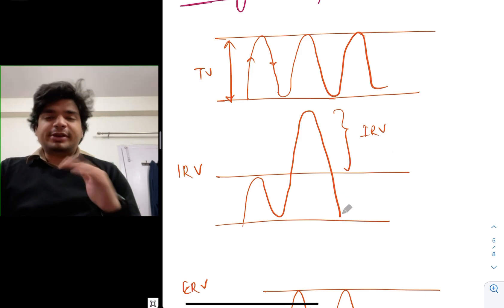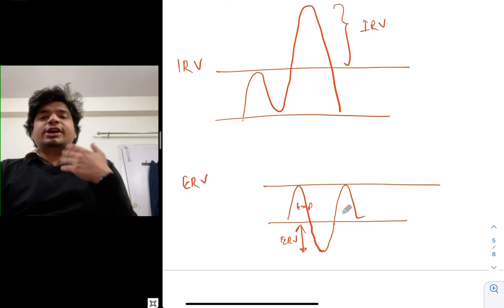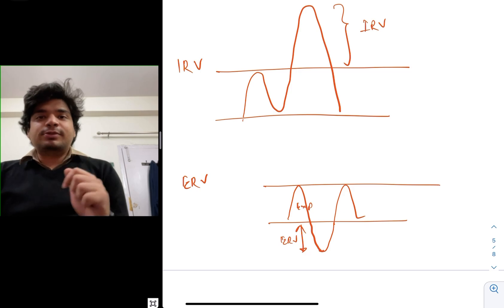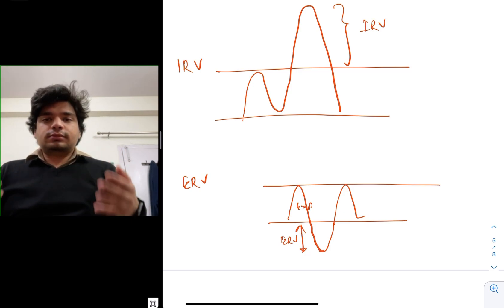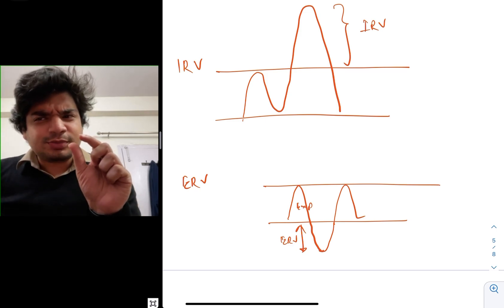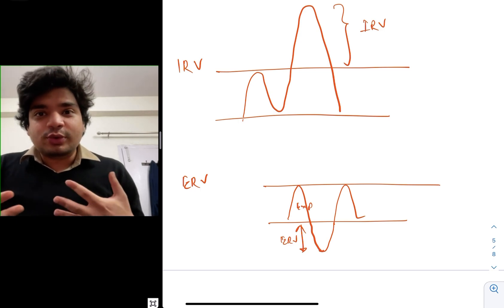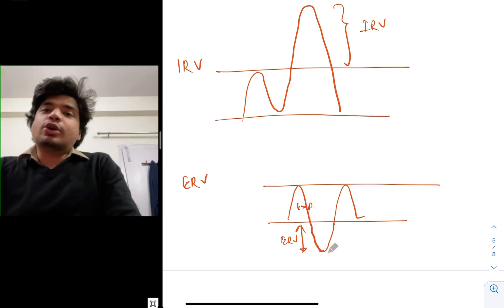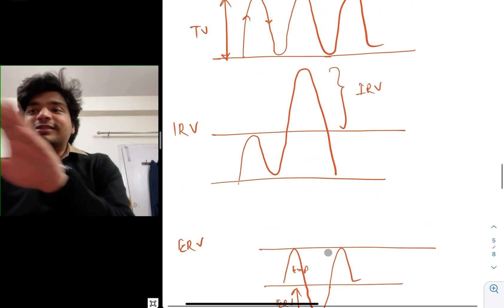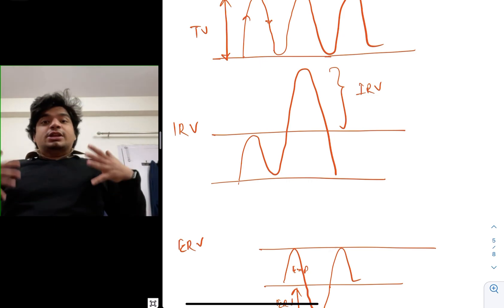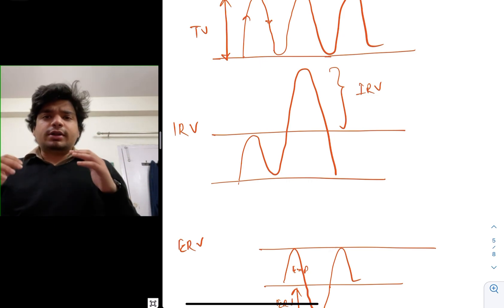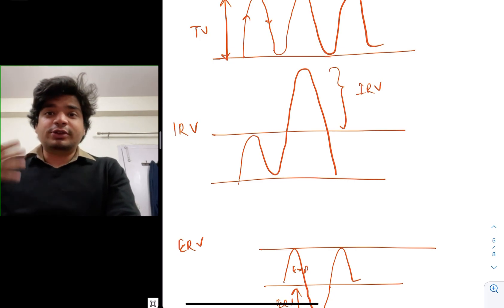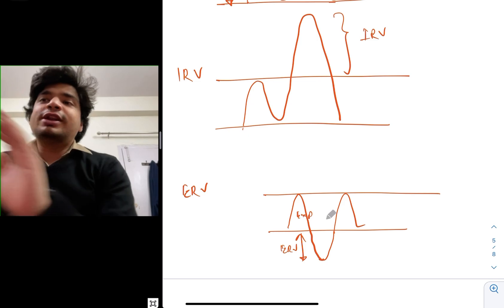Now coming back to normal inspiration and expiration. So I normally inspire, I normally expire — that is tidal volume. But suppose I want to expire more. The small amount of volume that I'm able to expire beyond the tidal volume is called the expiratory reserve volume. Remember that expiratory reserve volume will always be lesser compared to the inspiratory reserve volume. If you want to expire, it ends in a shorter duration compared to inspiration, because the expiratory reserve volume is smaller than the inspiratory reserve volume.